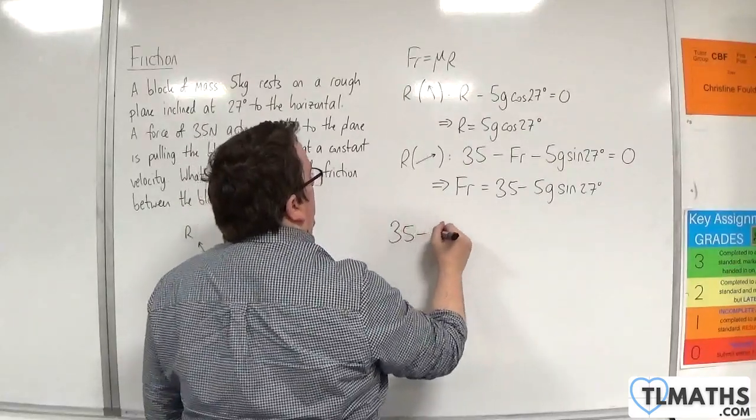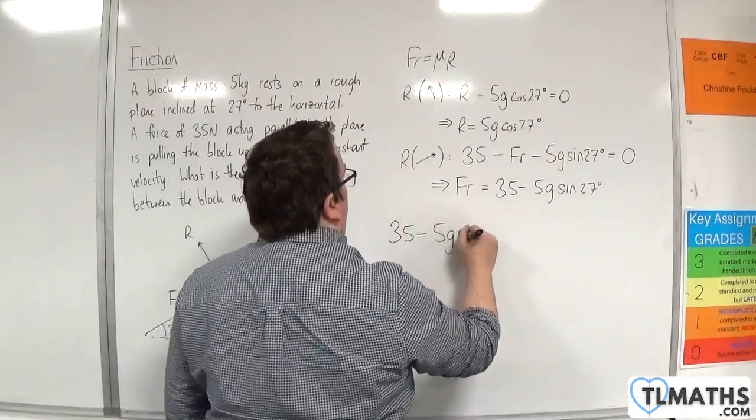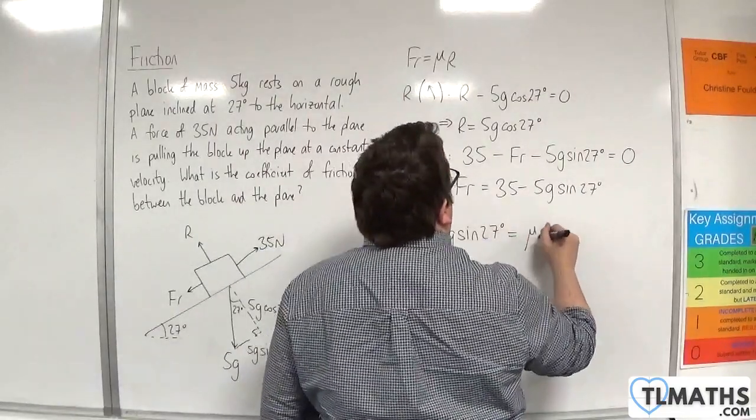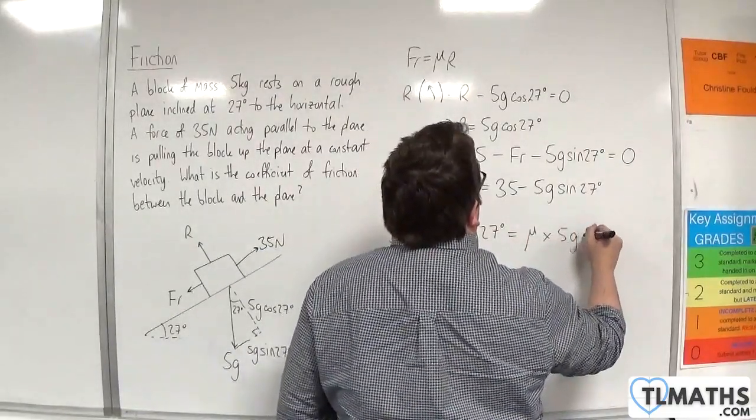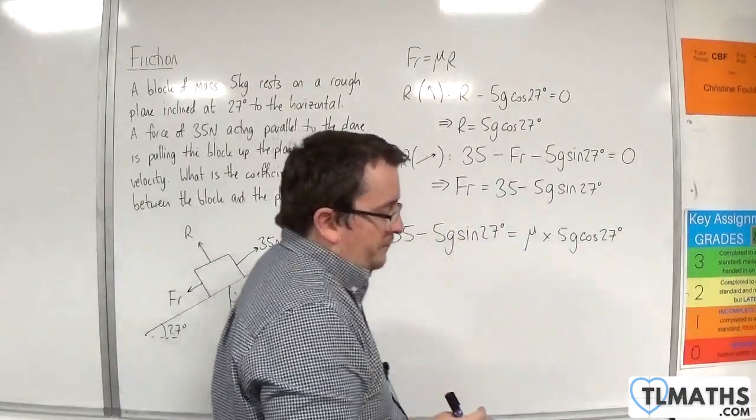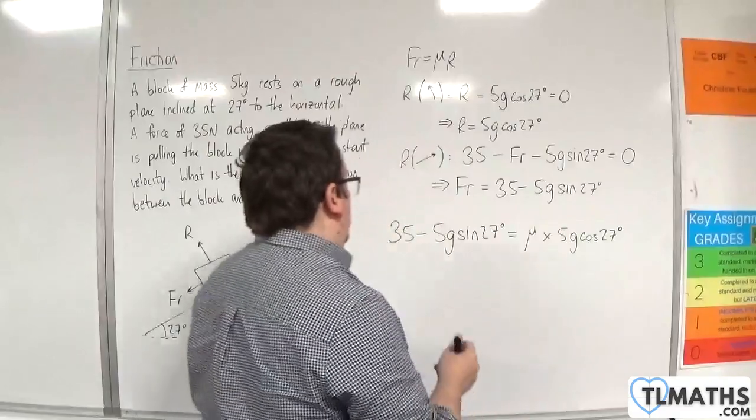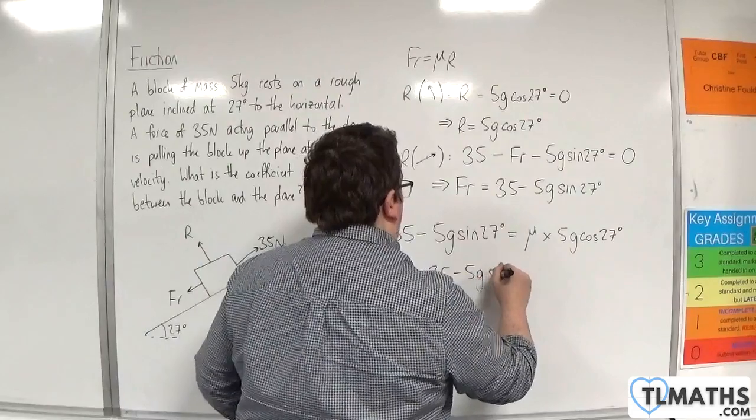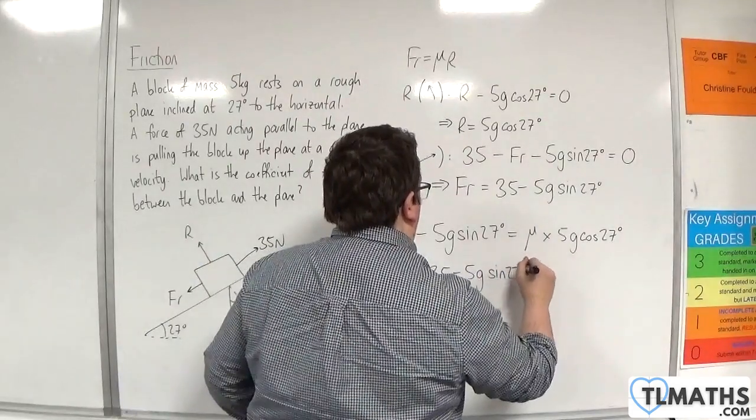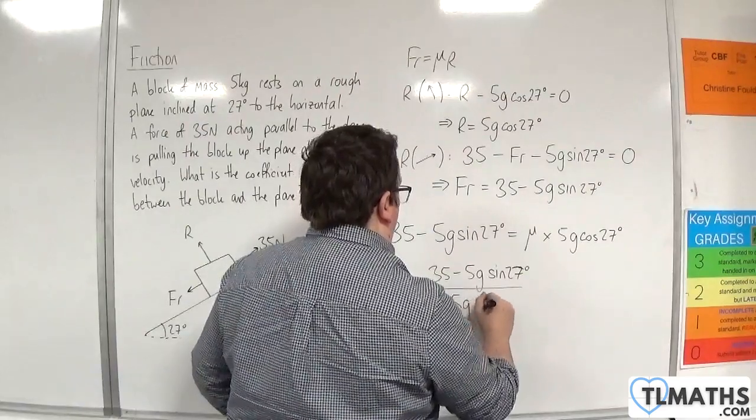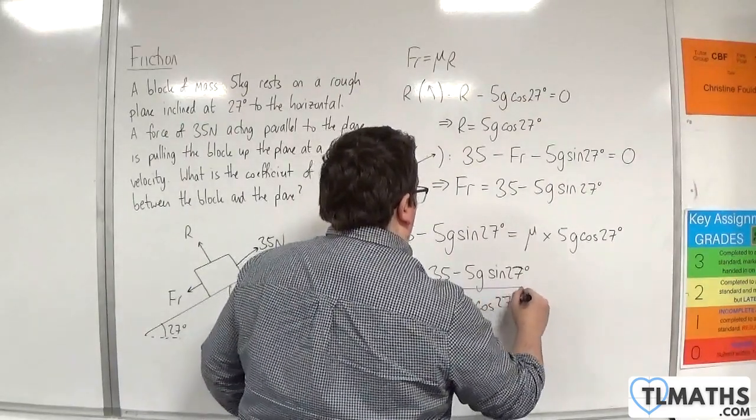So 35 take away 5g sine 27 degrees is equal to mu times 5g cosine of 27 degrees. So mu is 35 take away 5g sine of 27, divided by 5g cosine of 27.